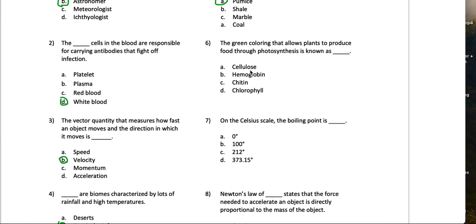Number six says the green coloring that allows plants to produce food through photosynthesis is known as blank. From what I recall from biology class, and I had a really good biology class, it was chlorophyll.